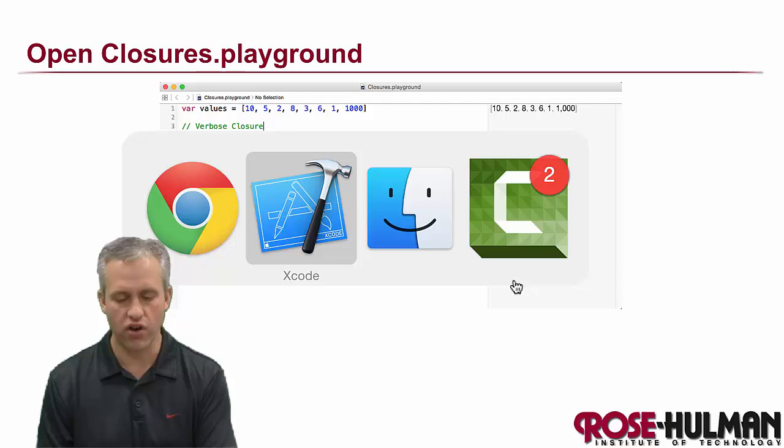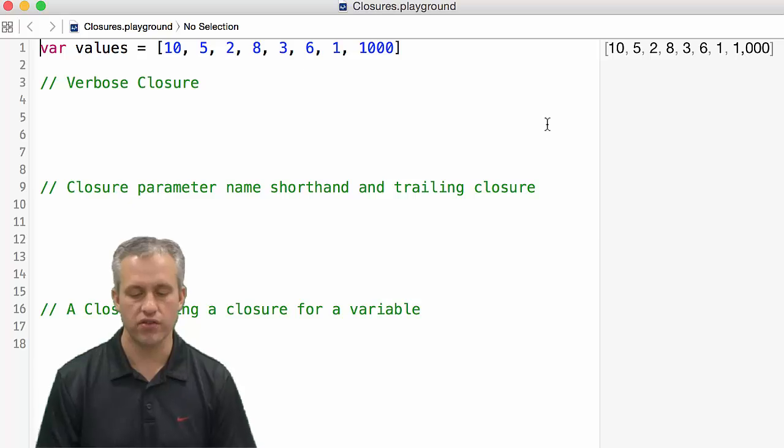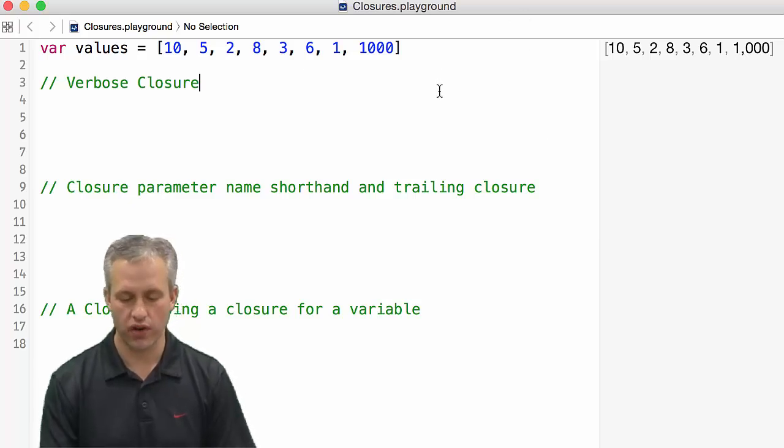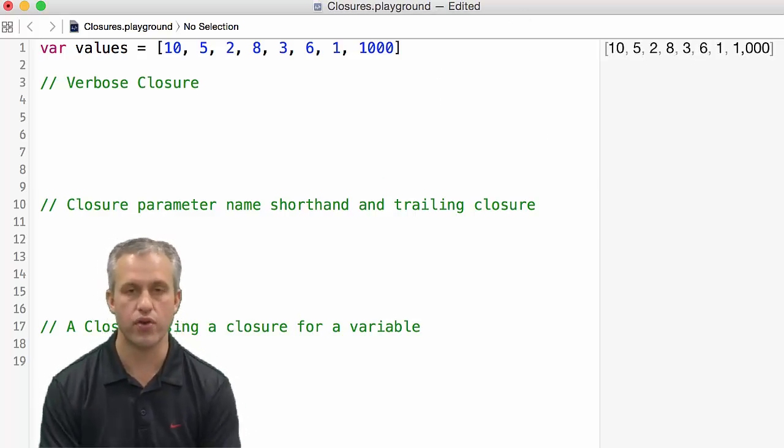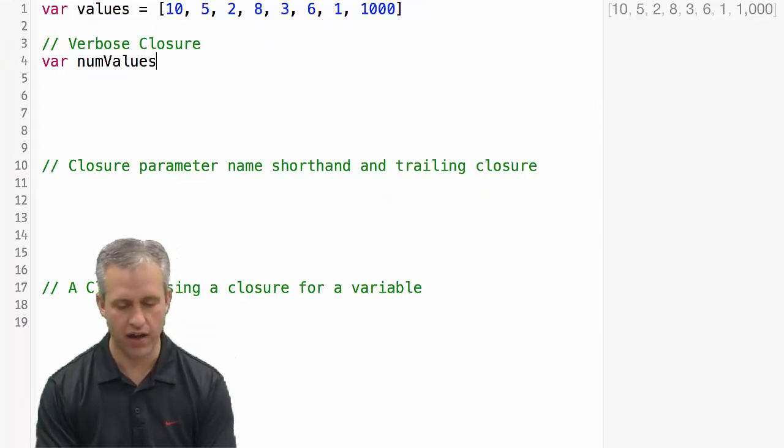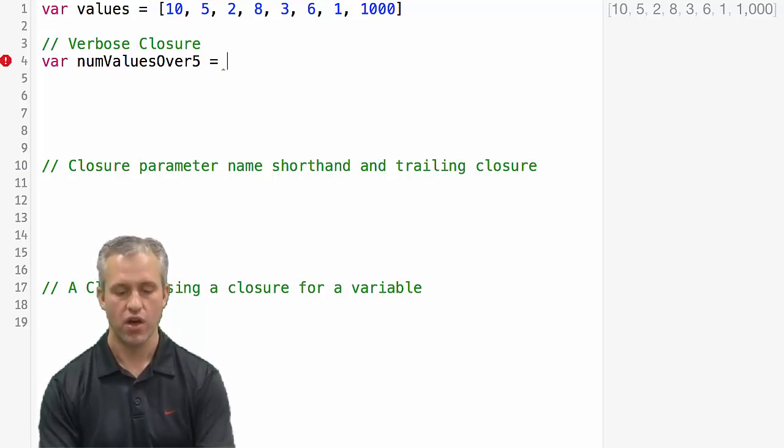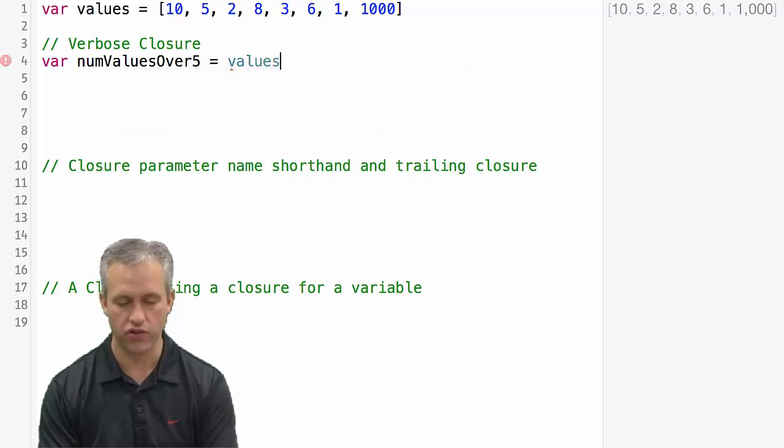So here's the long definition. Let's go ahead and start off by opening up our closures playground. All right, so it should kind of look like this. And what we're going to do is we're going to play with the reduce function. But what we're going to do is we're just going to look for the number of values over five in this array. There's a lot of ways that we could do this.